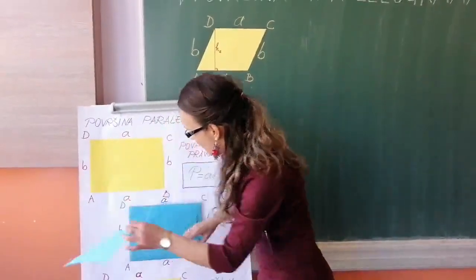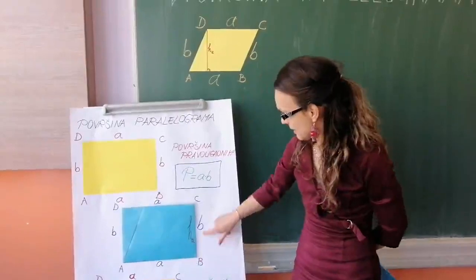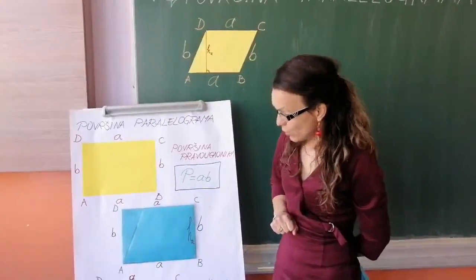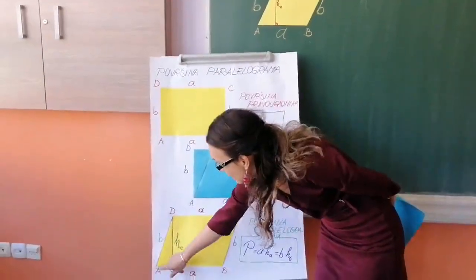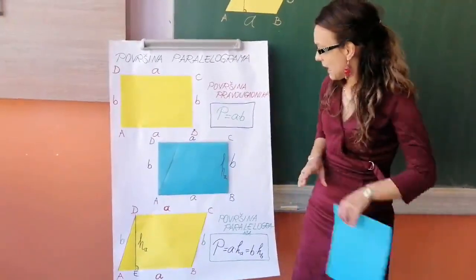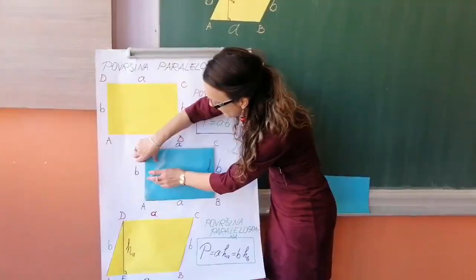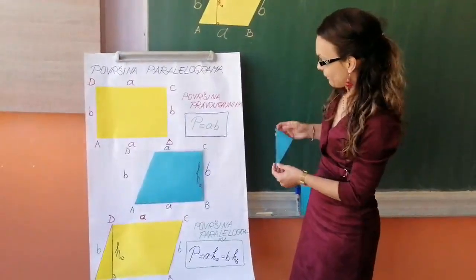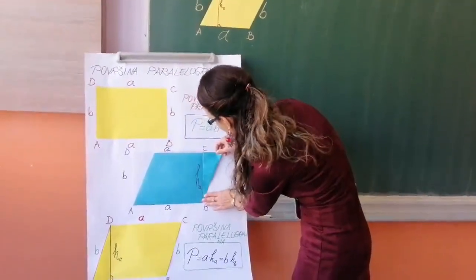Ja imam znači pravougaonik A, B, C, D prikazan na crtežu. Ako ja u svom tom pravougaoniku uočim jedan pravougli trougao, pravougli trougao čije dimenzije odgovaraju našem žutom trougiću A, E, D, i ako odradim transformaciju tog svog trougla, znači da iskrešem i sječem znači svoj pravougaonik, i nadovežem ga na stranicu B, C.